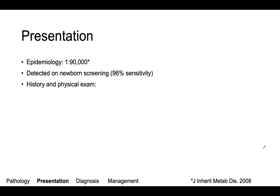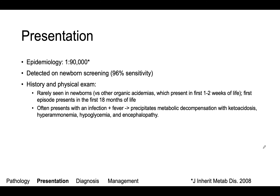This disease is rare, presenting in about one of every 90,000 newborns. It can be detected on newborn screening, which has a pretty high sensitivity for detecting this disease. The disease rarely presents in newborns — this is in contrast to other organic acidemias, which usually present in the first week or two of life. However, patients usually present in the first one to two years of life.